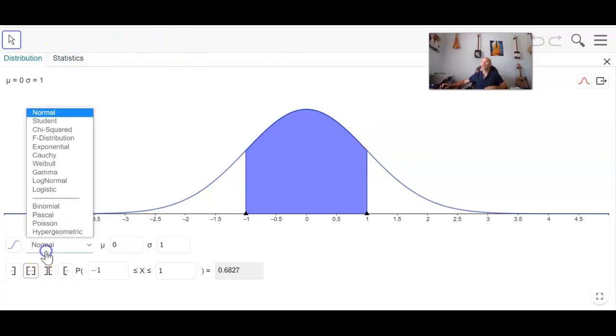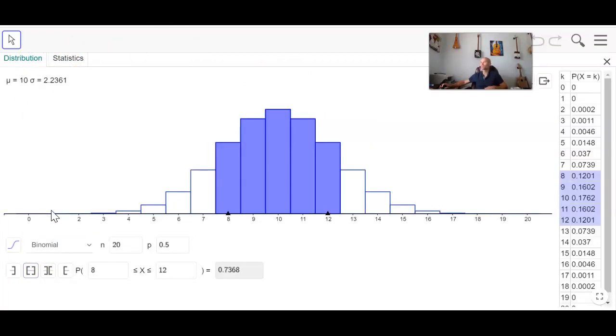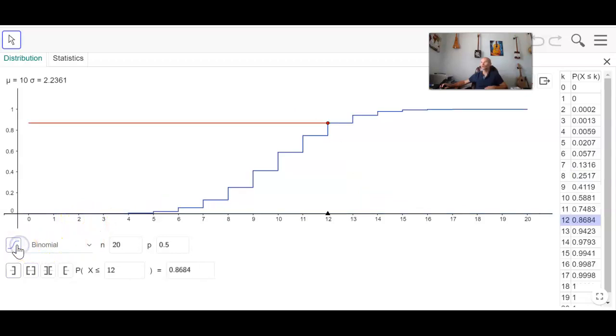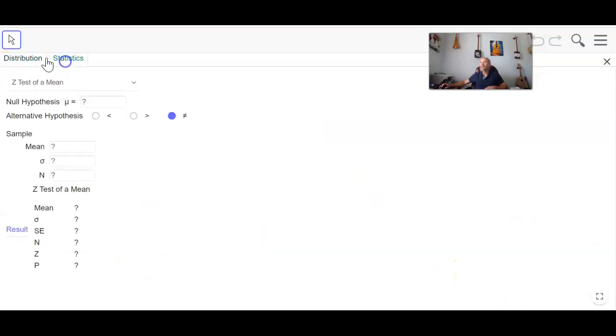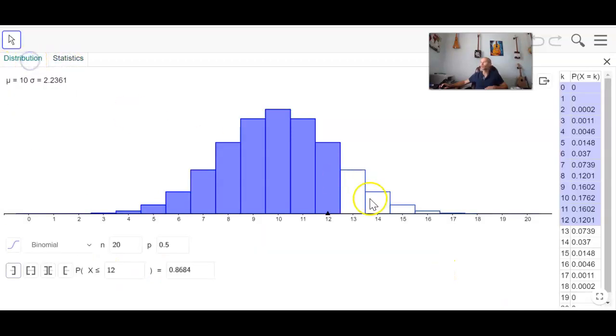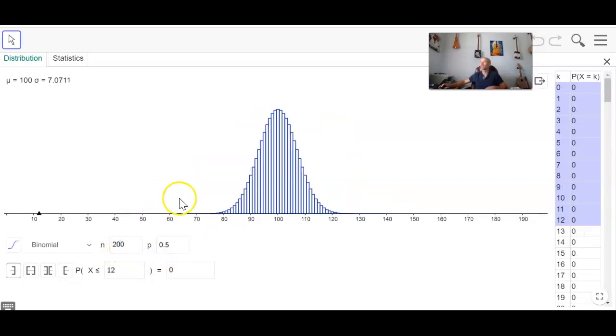But let's change the distribution to a binomial. And what we're going to do is, there might be a way to superimpose a curve. But even with n equals 20, we see that this is somewhat bell-shaped. But watch what happens if I make this 200. We get something that looks very much bell-shaped. And in the grand scheme of things, this is a fairly continuous distribution.